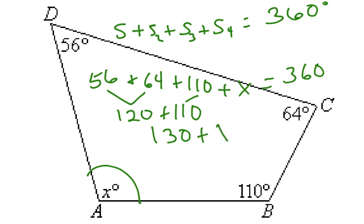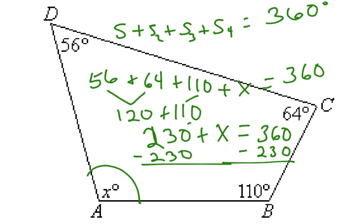So, we have 130 plus x equals 360 degrees. So, we can subtract, or sorry, that was 230, not 130. So, we can subtract 360 minus 230, minus 230 on both sides. This cancels out, which leaves us with x equals 130 degrees.